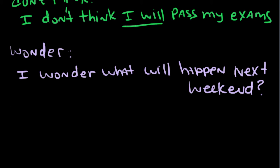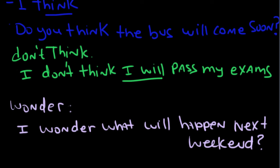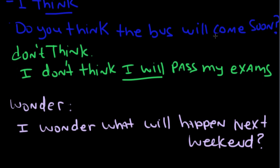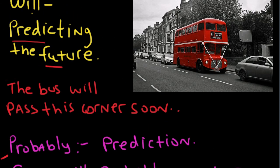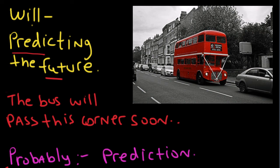So we use will to make future predictions. We use will with these words: wonder, don't think, think, I'm sure, and probably. I hope this video has helped you to understand the uses of will for predictions in the future. Please feel free to comment on the video and keep studying English. I encourage you to watch the rest of the intermediate series of videos about future grammar, such as going to, present continuous, and will for decisions made in the moment. Good luck with your English.